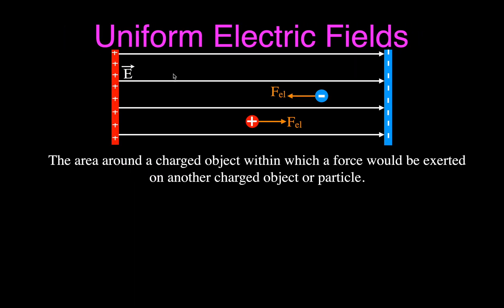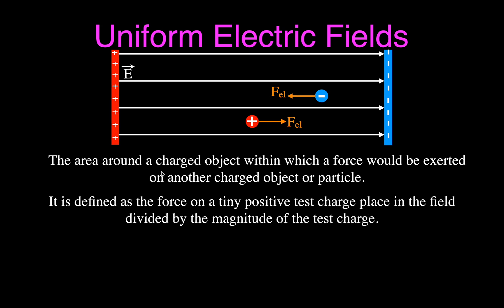Mathematically, the electric field is defined as the force on a tiny positive test charge — one that won't disrupt the field — divided by the magnitude of that charge. The symbol for the electric field is E, and it's a vector quantity. So E equals force divided by charge. Force is measured in newtons and charge in coulombs, so the units for electric field strength are newtons per coulomb.